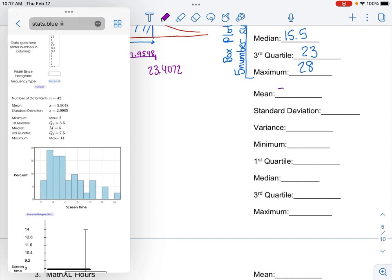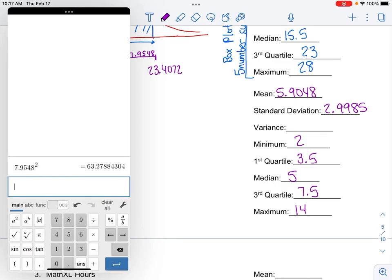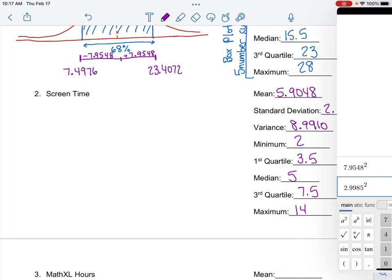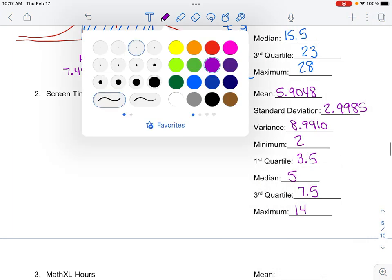And it pulls up data points 42. My mean is 5.9048. Standard deviation 2.9985. Minimum is 2. First quartile is 3.5. Median is 5. Third quartile is 7.5. And maximum is 14. So that's really quick. We'll just go ahead and find our variance. It's going to be 2.9985 squared. And then I'm going to create my box plot.